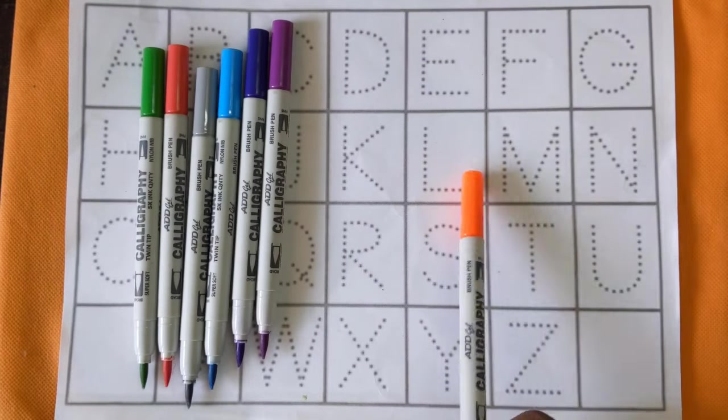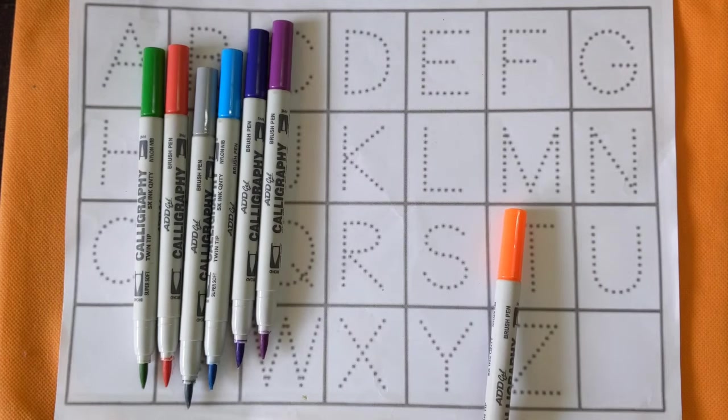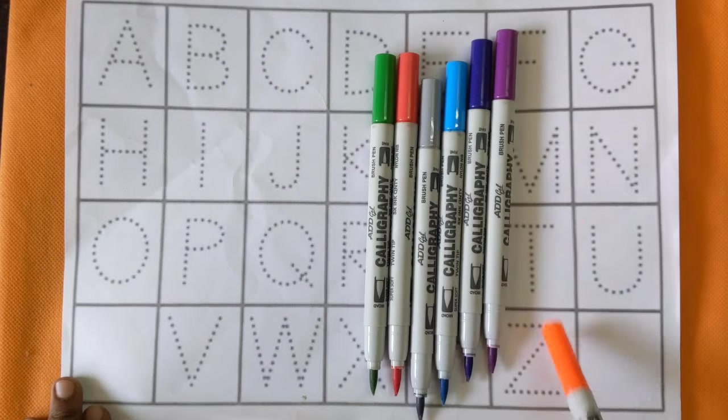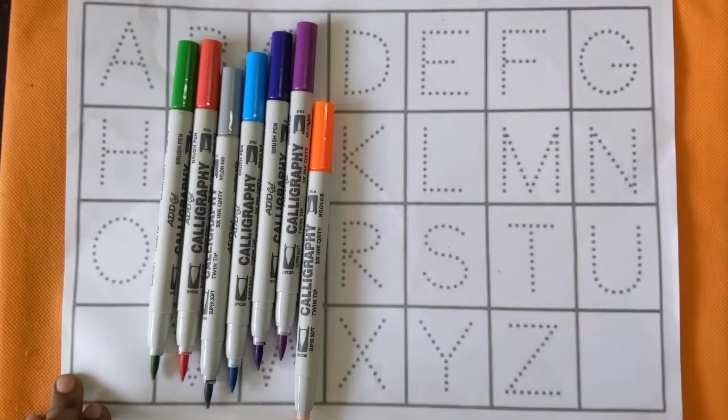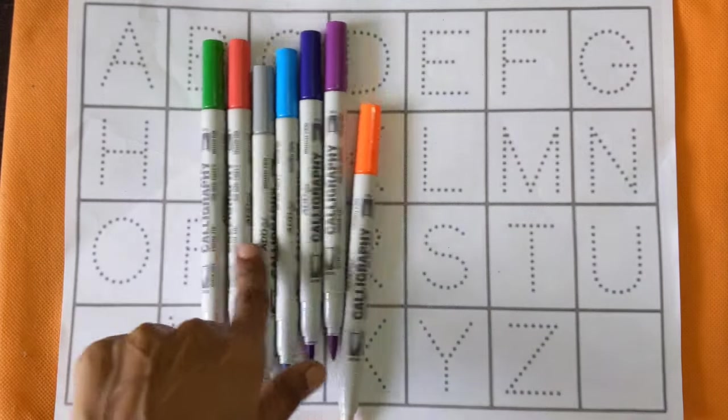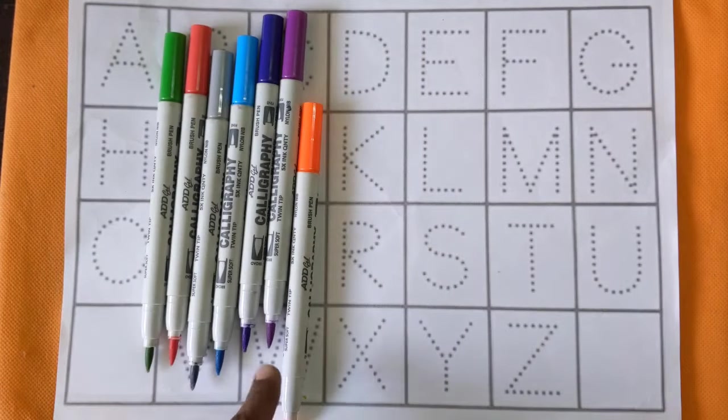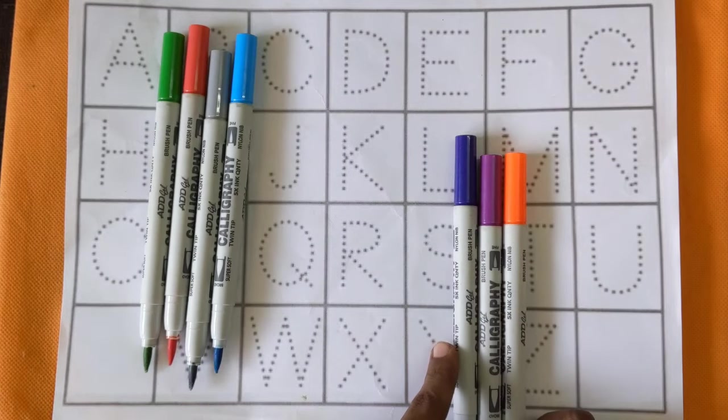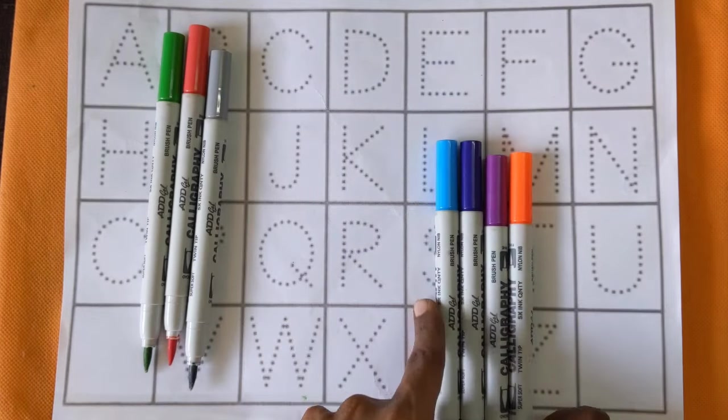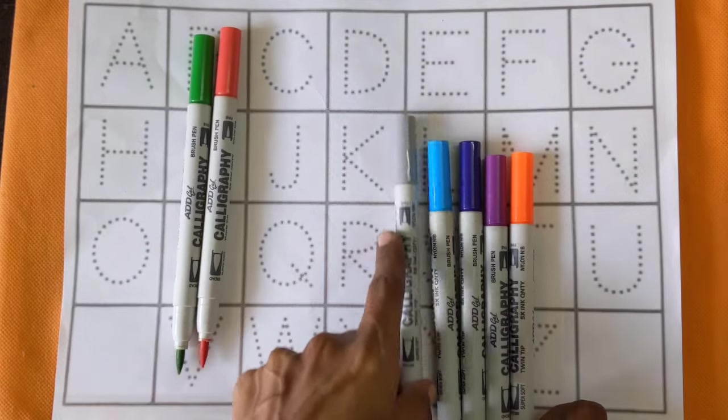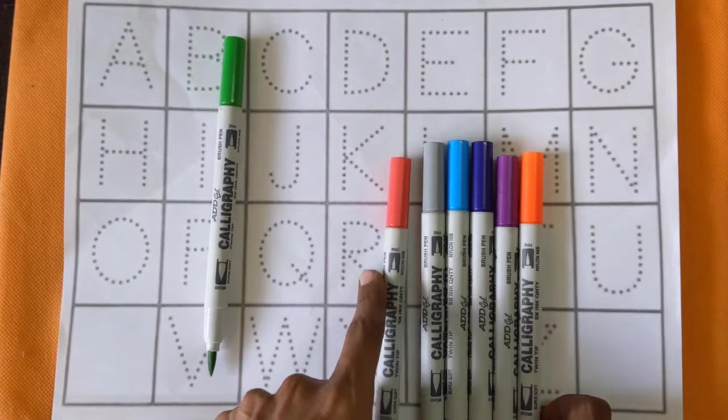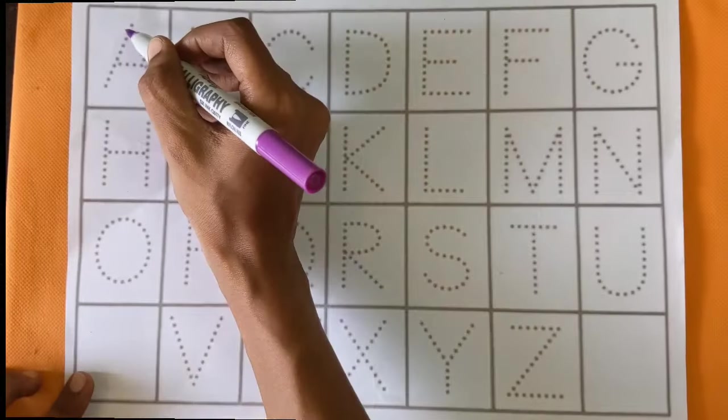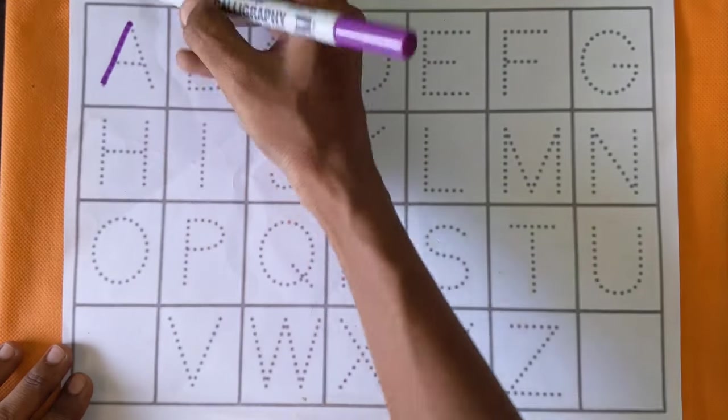Hello children, welcome back to my channel Learn with Ovi. Today we are going to trace A to Z alphabets with colors. So let's get started. At first, we will learn some color names. It's an orange color, purple color, violet color, sky blue color, gray color, red color, and this one is light green.